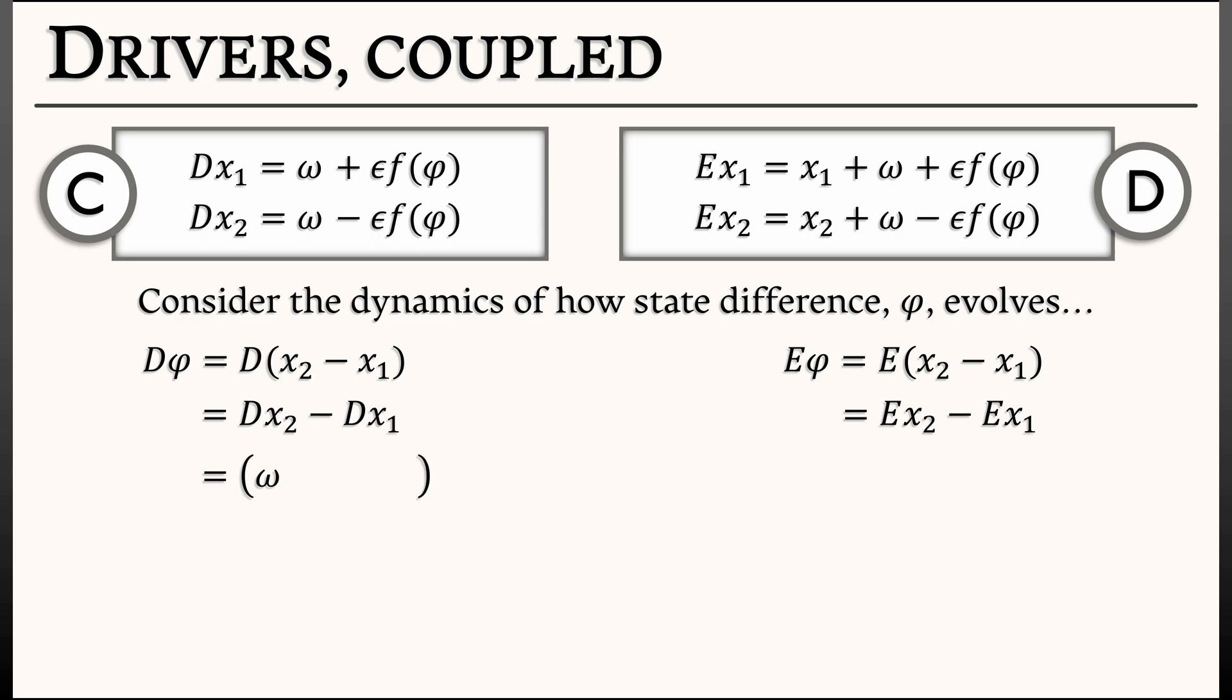So dx2 is quantity omega minus epsilon times f of phi. And then I have to subtract off dx1, omega plus epsilon f of phi. In discrete time, very similar, I take e x2, which is x2 plus omega minus epsilon f of phi, subtract off x1 plus omega plus epsilon f of phi.